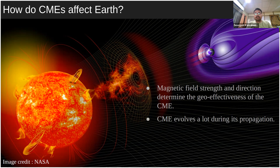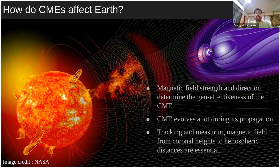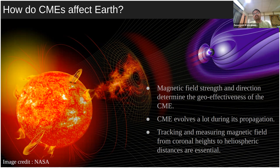When the CME arrives close to the Earth, its magnetic field starts to interact with the magnetosphere. If the CME's magnetic field is of opposite polarity to Earth's, magnetic reconnection can happen, opening up the magnetosphere and allowing energetic particles to enter the Earth's atmosphere. Magnetic field strength and direction determine the geo-effectiveness of the CME.